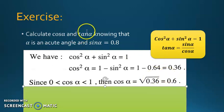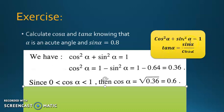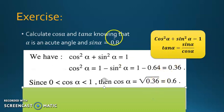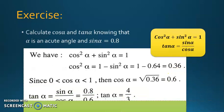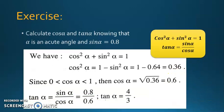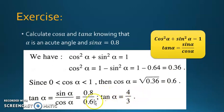Now for tangent alpha, use the second fundamental relation: tangent alpha equals sine alpha over cosine alpha = 0.8 over 0.6, which gives 4 over 3.